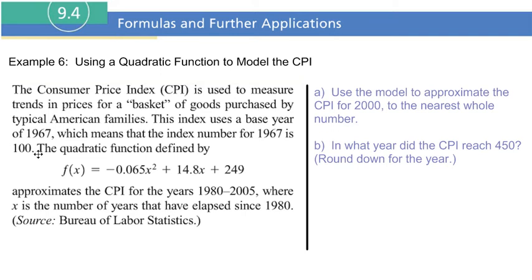Now the quadratic function defined by f(x) = -0.065x² + 14.8x + 249 approximates the Consumer Price Index for years 1980 to 2005, only between these years, where x is the number of years that have elapsed since 1980.